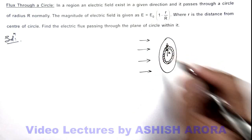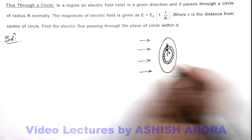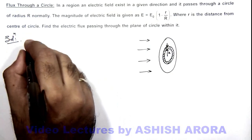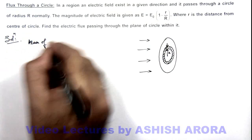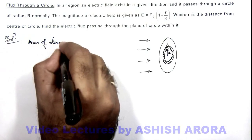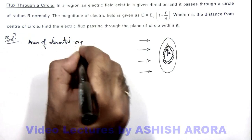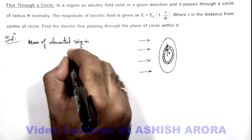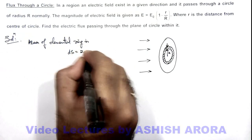If the width of this elemental circle is dx, we can directly write that area of elemental ring is dS = 2πx dx.